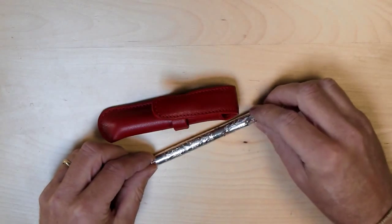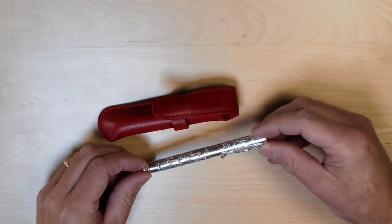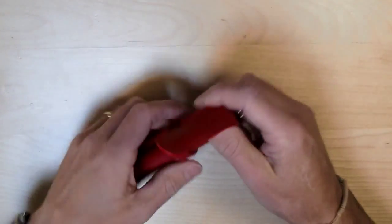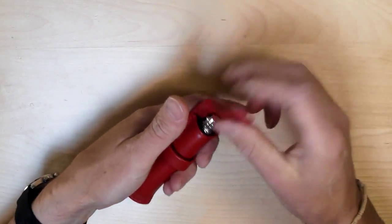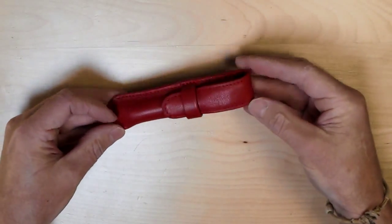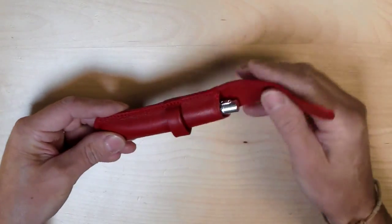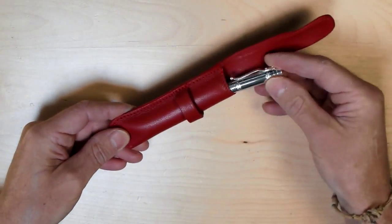We'll start with the classic Yard-O-Led Viceroy pocket, in this case in the Victorian finish. This pen's an ideal match for this pen case. As you can see it slips in nicely, the flap closes well and there's plenty of space to get the pen in and out, but at the same time provide good protection.